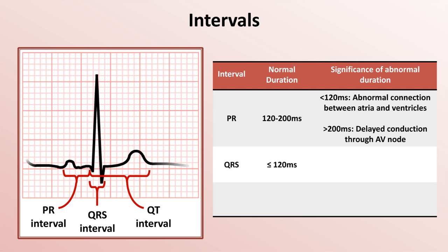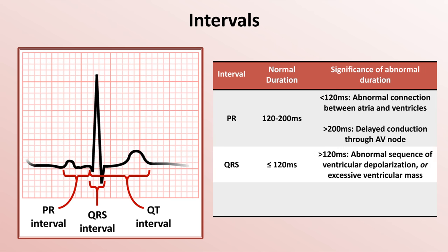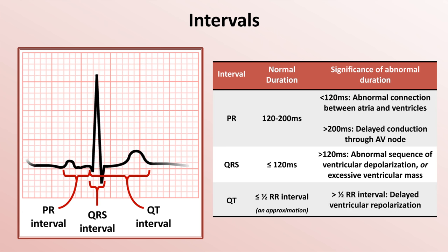The normal QRS interval is less than or equal to 120 ms. An interval greater than 120 ms implies an abnormal sequence of ventricular depolarization or excessive ventricular mass. The QT interval is a little tricky since the normal range is very dependent upon heart rate and mildly dependent upon gender. As an approximation, it should be no more than half the total RR interval. A prolonged QT interval is indicative of a delay in ventricular repolarization, which usually places the patient at high risk of a dangerous arrhythmia called torsade. Both the QT interval and torsade will be discussed in more detail during upcoming lectures on ventricular tachycardia and congenital arrhythmogenic diseases.